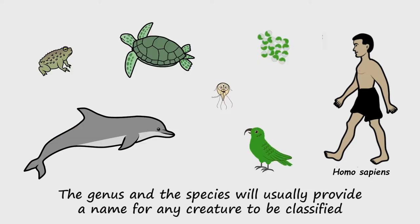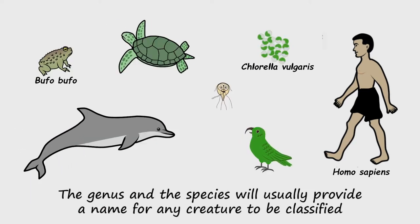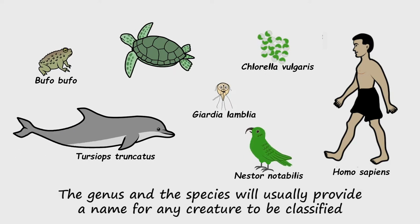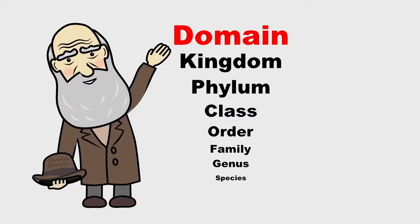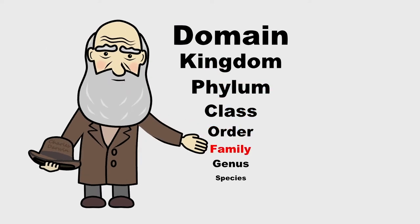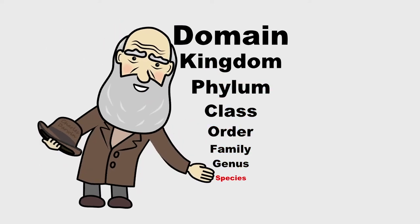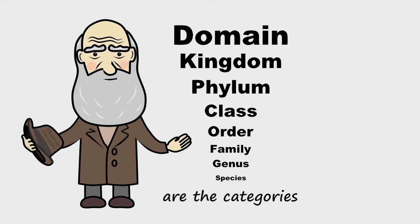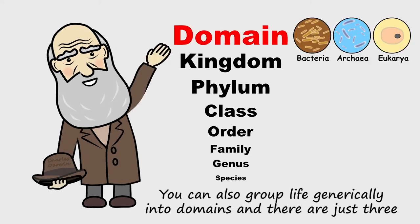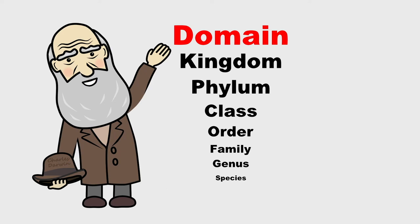The genus and the species will usually provide a name for any creature to be classified. You can also group life generically into domains, and there are just three domains.